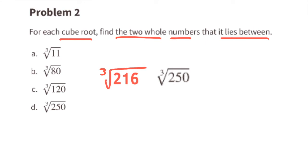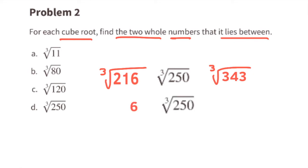Part d: the cube root of 250. That lies somewhere between the cube root of 216 and the cube root of 343. That's because the cube root of 216 is 6, and the cube root of 343 is 7. So the cube root of 250 is a decimal that lies between 6 and 7.